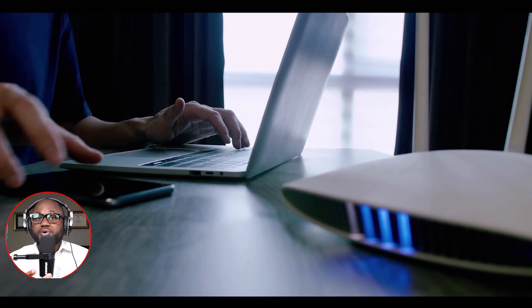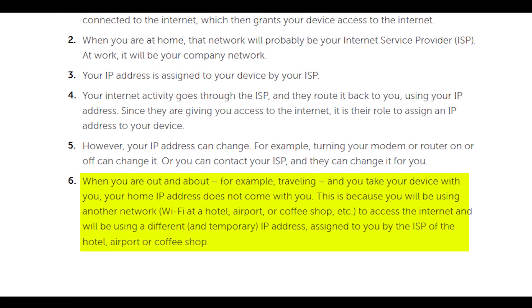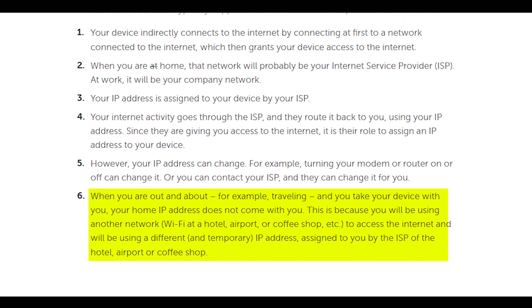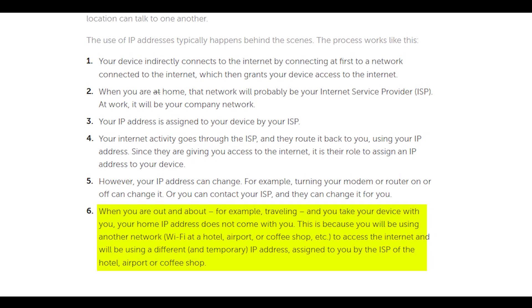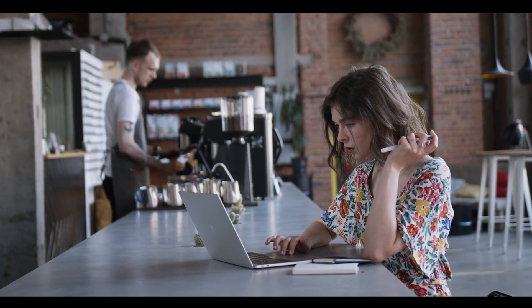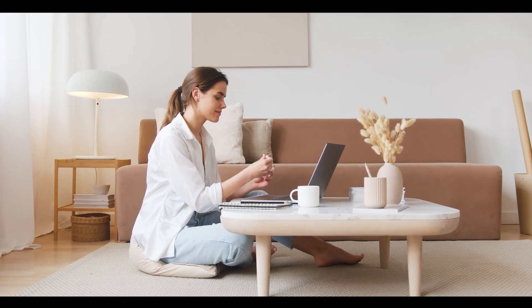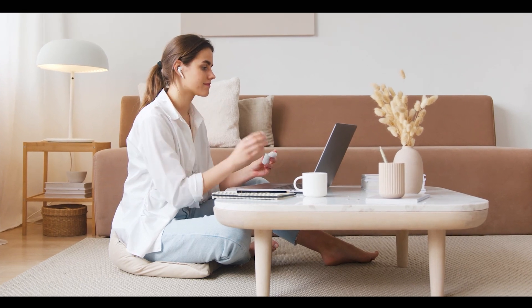Five, however, your IP address can change. For example, turning your modem or router on and off can change it, or you can contact your ISP and they can change it for you. Number six, when you are out and about — for example, traveling — and you take your device with you, your home IP address does not come with you. That is because you will be using another network, like the Wi-Fi at the hotel, the airport, the coffee shop, etc. You might be using a temporary IP address assigned to you by the ISP of the hotel, airport, or coffee shop. As the process implies, there are different types of IP addresses, which we're going to talk about right now.